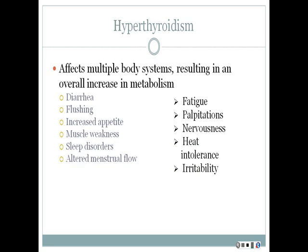With too much thyroid hormone, metabolism speeds up, so we see things like palpitations, nervousness, heat intolerance, irritability, diarrhea, flushing, increased appetite, muscle weakness, sleep disorders, altered menstrual function, and fatigue. Whether there's too little or too much thyroid hormone, many things can go wrong because it affects almost every bodily system.